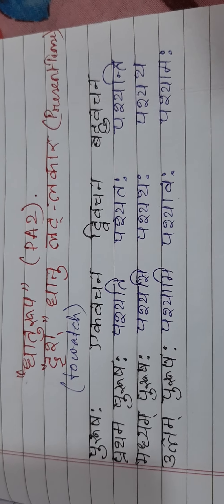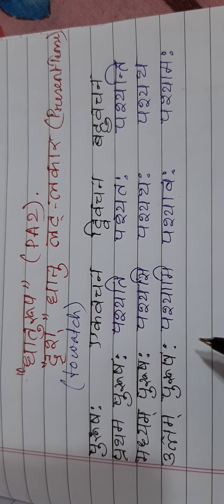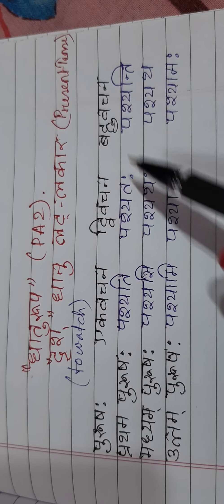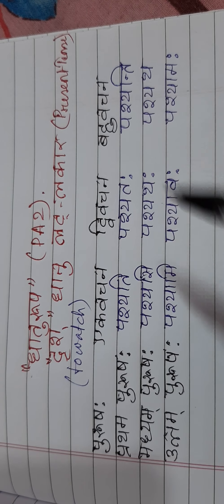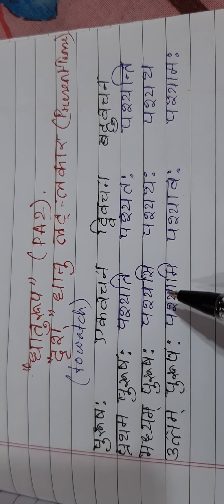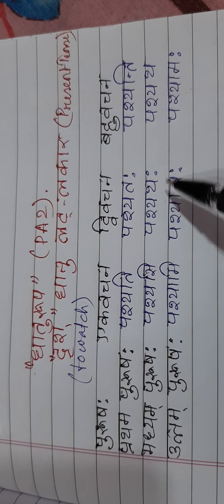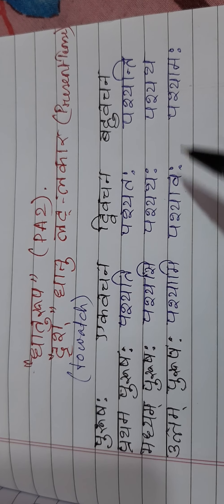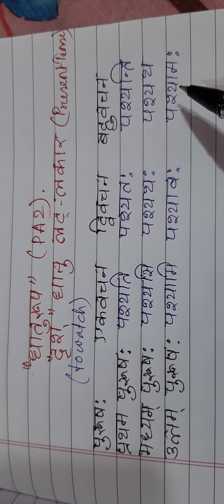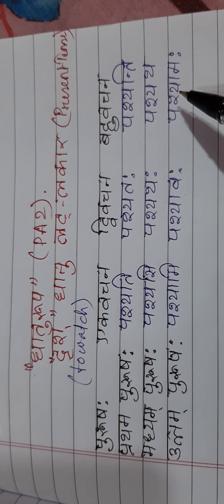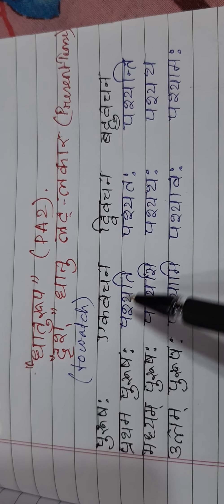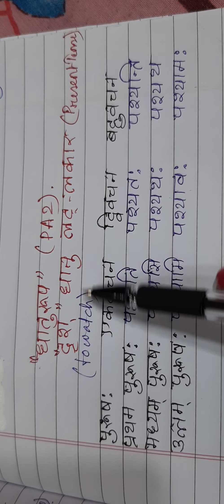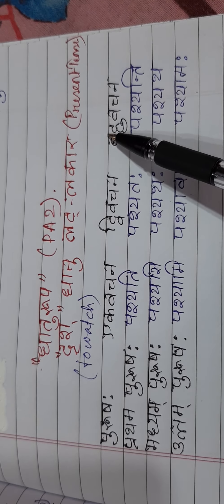Dhrish Dhatu will become PASYA. The present tense forms are: PASHYATI, PASHYATAH, PASHYANTI, PASHYASI, PASHYATHAH, PASHYATHA, PASHYAMI, PASHYAVAH, PASHYAMAH. This is the present tense of Dhrish Dhatu.